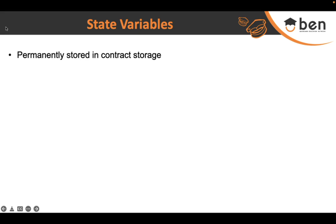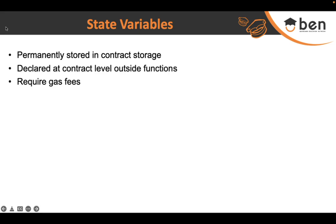State variables are those variables which are permanently stored in contract storage. They are declared at the contract level, meaning that once you deploy this contract on the blockchain, these variables will also be saved on the blockchain and will remain there forever.